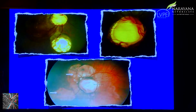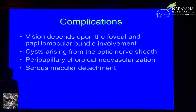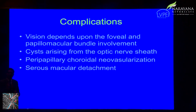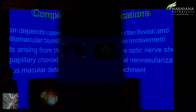Optic disc coloboma as well as uveal coloboma is most often misdiagnosed as glaucoma, even in the adult age group. Monitor for foveal or paramacular bundle involvement. Patients can develop cysts from the optic nerve sheath, so orbital imaging is very important. They can also develop peripapillary CNVM and serous macular detachment — complications that require careful monitoring and sometimes intervention.